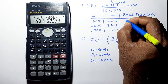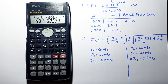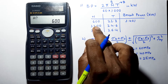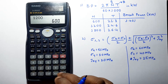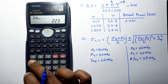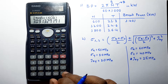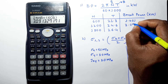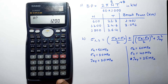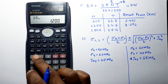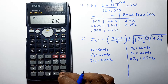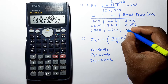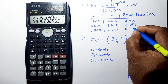Enter torque value as 22.3. Now we get the answer of brake power as 1.401. Press equals again and it will ask for the RPM value — enter 1200 and torque 24.6, giving the answer 3.09. Press equals again, enter 1800 RPM and torque 26.4, and we get brake power as 4.976.